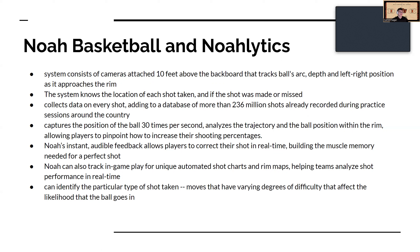The Noah Basketball system consists of cameras attached 10 feet above the backboard and tracks the ball's arc, depth, and left-right position as it approaches the rim. The system knows the location of each shot and if it was made or missed, collecting data on every shot and adding to a database of more than 236 million shots recorded during practice sessions around the country. The system captures the ball's position 30 times per second, analyzes trajectory and ball position within the rim, allowing players to pinpoint how to increase their shooting percentages. Noah's instant audible feedback allows players to correct their shot in real time, building the muscle memory needed for a perfect shot.